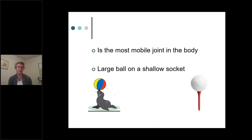The shoulder is the most mobile joint in the body, and it's the most mobile as a result of being a very large ball on a very shallow socket. This is unlike the hip joint, which has a deep socket and a small ball providing much more stability. Think of it as a golf ball on a golf tee — there's a lot of inherent movement, a lot of potential instability, and a lot of things that can go wrong.